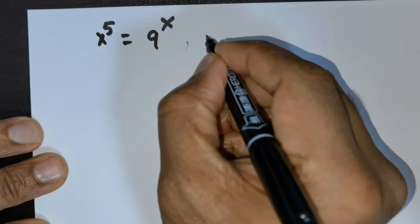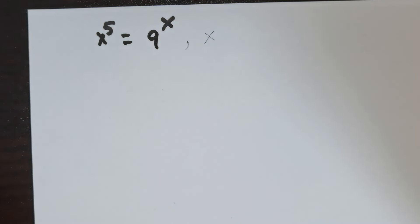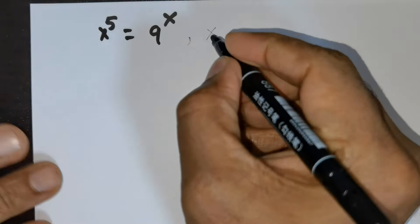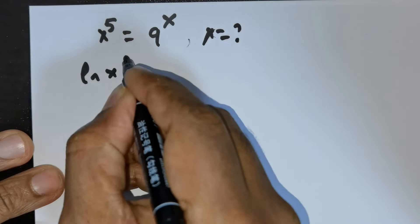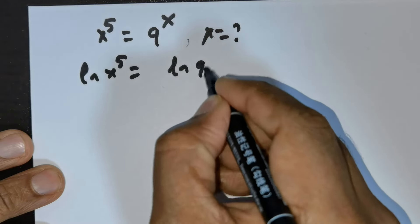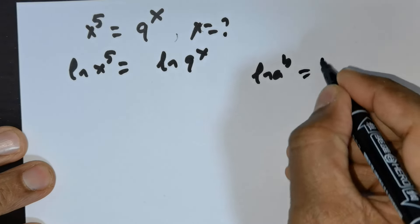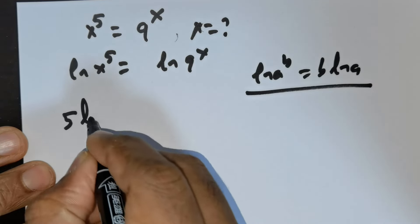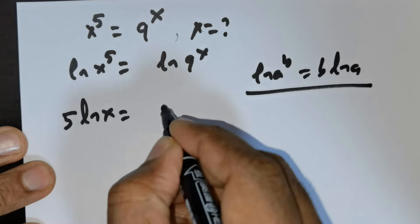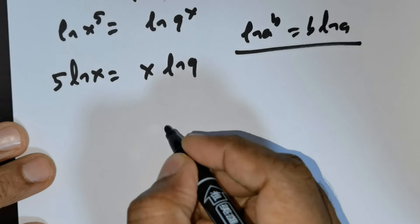Good day everybody. We are expected to find the value of x. So foremost I would take ln both sides, and I know a formula: ln a raised to the power of b is equal to b times ln a. So this is 5 times ln x is equal to x times ln 9.